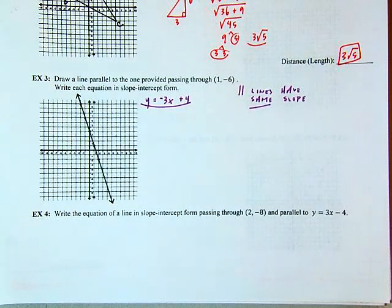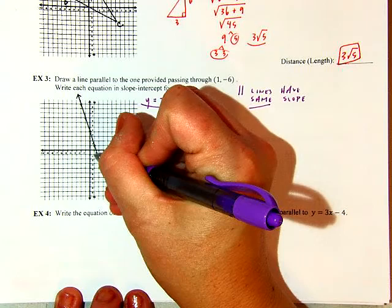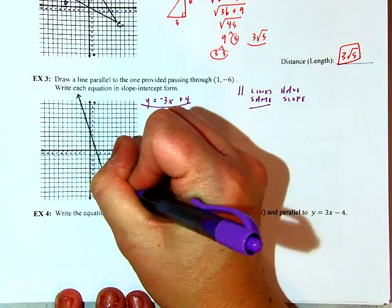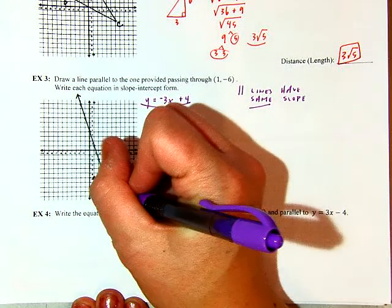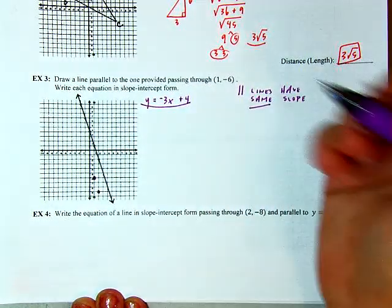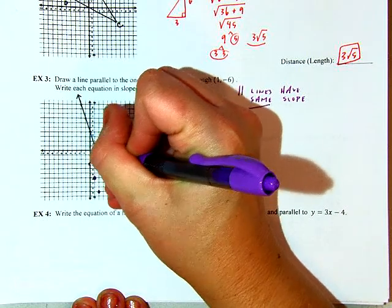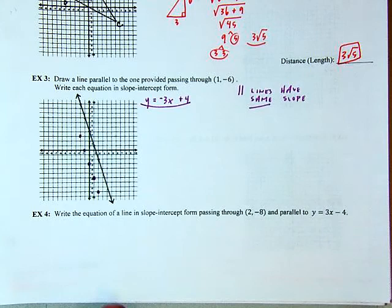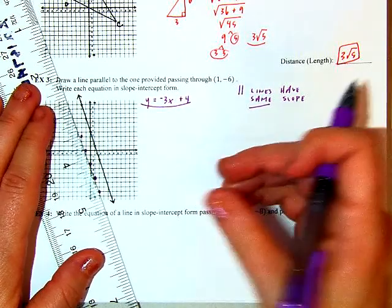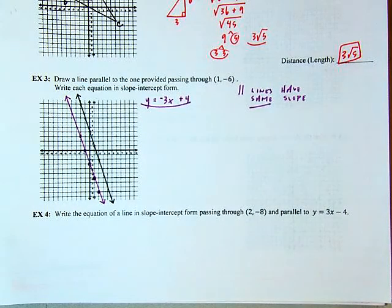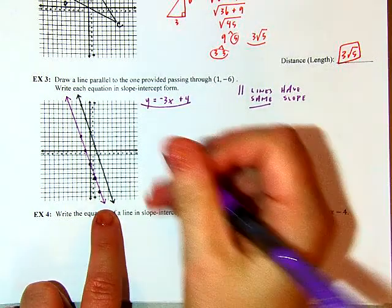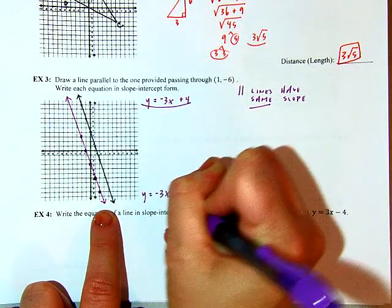Parallel lines are coplanar, they never intersect, and they have the same slope. Going to the new point (1, negative 6) and building off it with the same slope — down 3, right 1, and then up 3, left 1 in the opposite direction — gives my parallel line in purple. They have the same slope, they're coplanar, and they're never going to cross. This equation is y equals negative 3x minus 3.